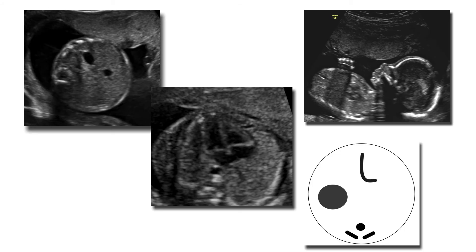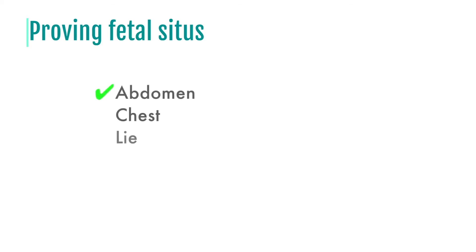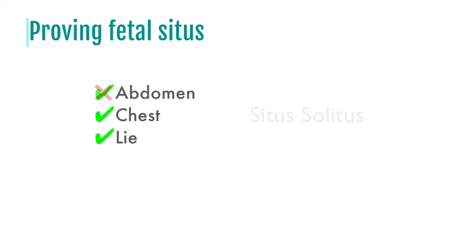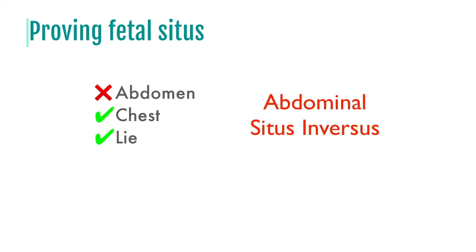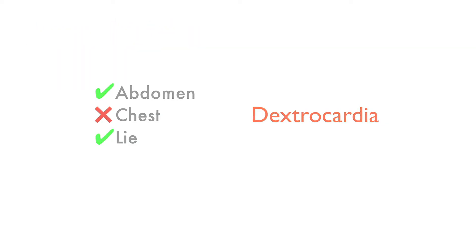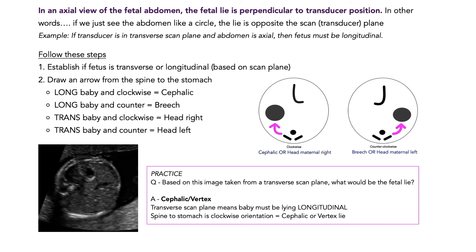Why are they showing you these pictures instead of an actual view of the fetal lie? Because they need you to prove you understand fetal situs. As long as the abdomen and the chest match the fetal lie that it should be, we call it situs solitus. If something doesn't fit — say the stomach is opposite — that's abdominal situs inversus. If the abdomen and the heart are both different than the supposed lie, that would be total situs inversus. If the stomach is in the right position but the apex of the heart is flipped, that would be dextrocardia. This method might take a little getting used to, but it is tried and true, and once you do a few practices it will be your go-to method.